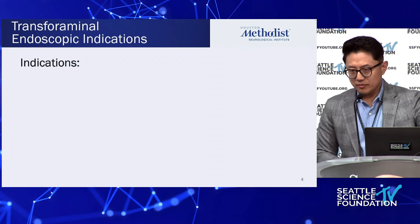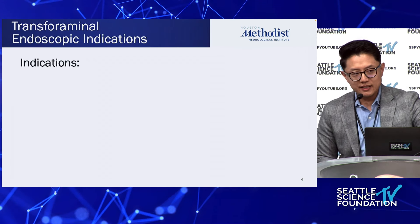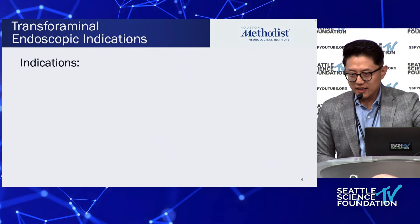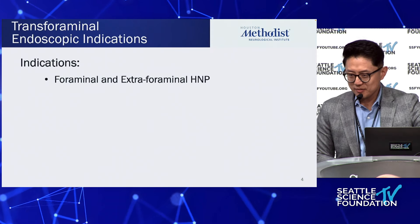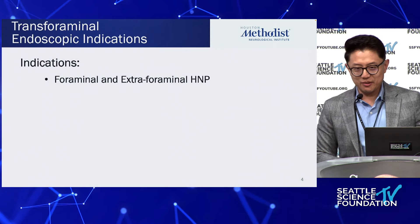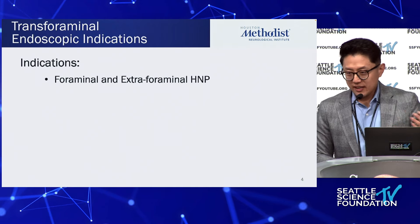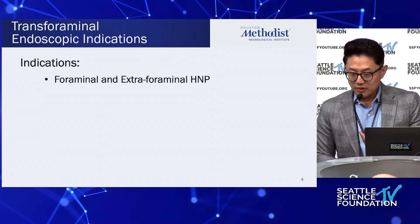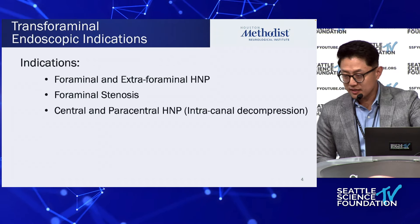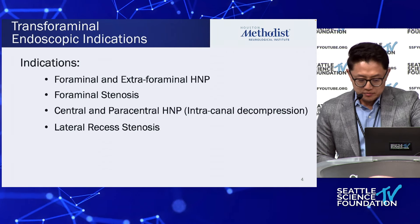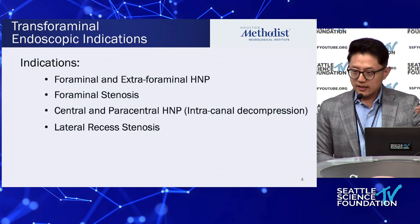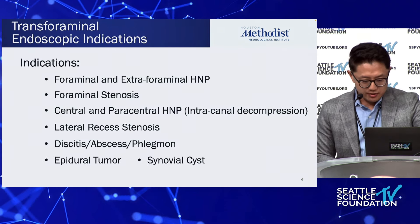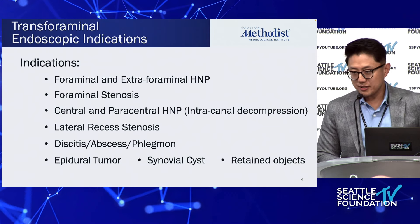I heard the term 'endocurious' recently for surgeons interested in endoscopy. Most endocurious surgeons say it must be great for foraminal and extra-foraminal discs — yes, that's true, but that is quite literally only the tip of the iceberg. We can address foraminal stenosis, get central, paracentral, decompress the lateral recess from outside-in, take the ligamentum flavum from outside-in, access psoas abscess, phlegmon, epidural tumor, synovial cyst, retained objects — you can do anything transforaminal.